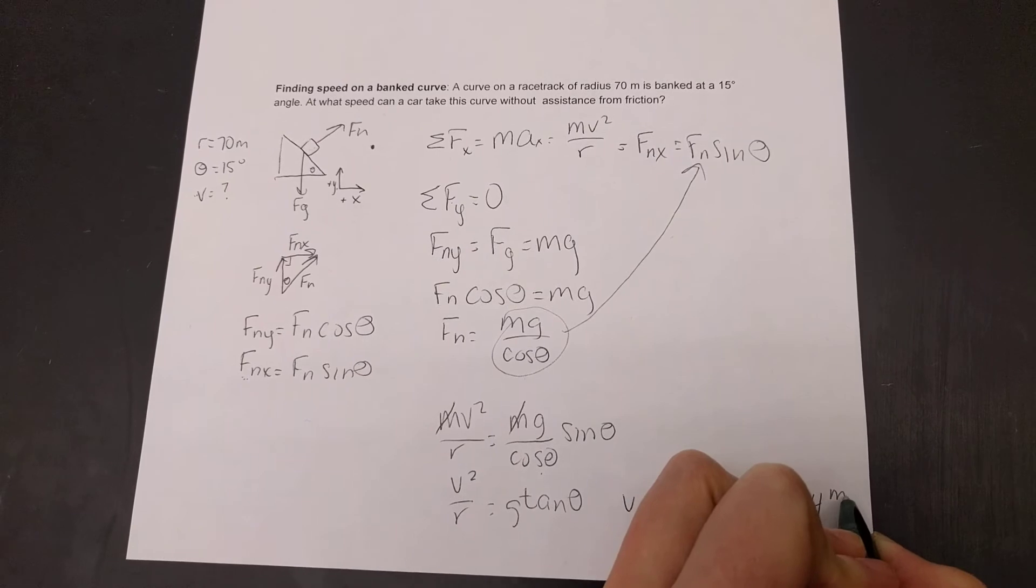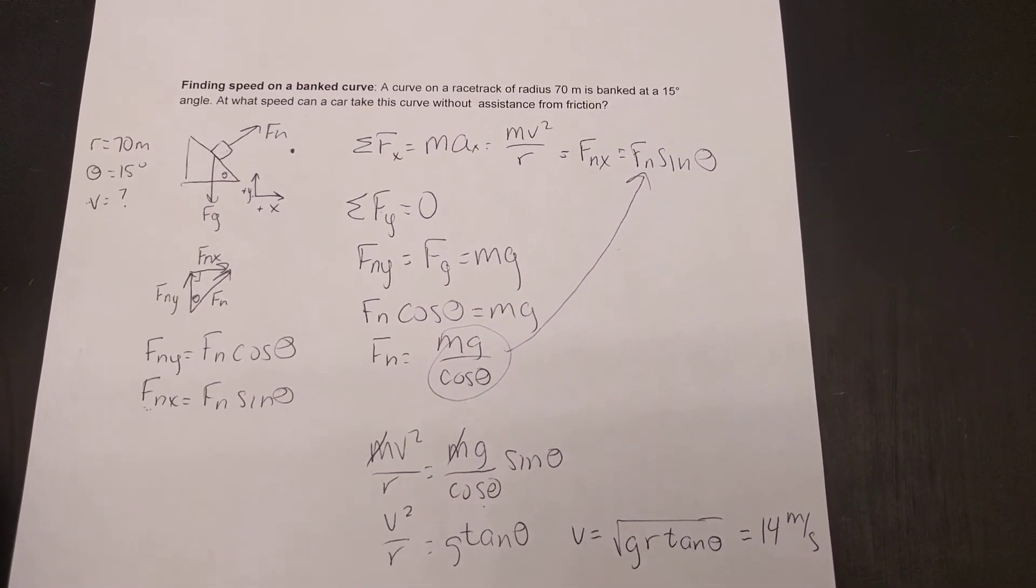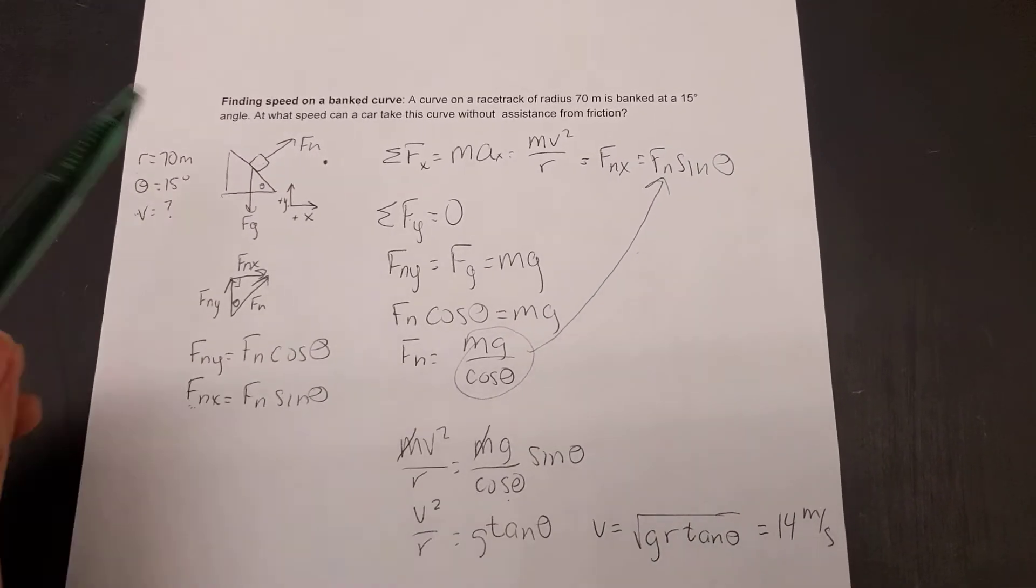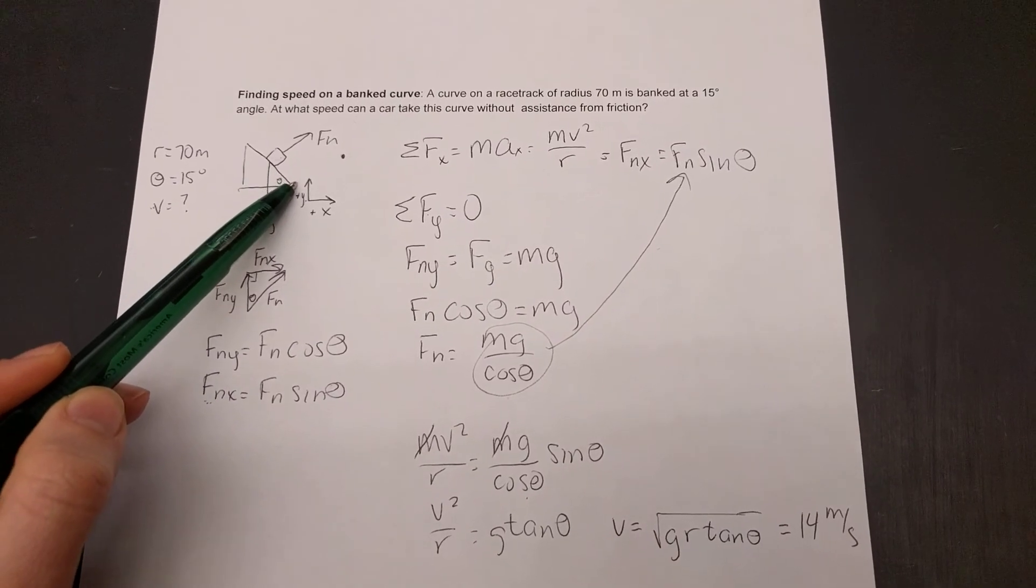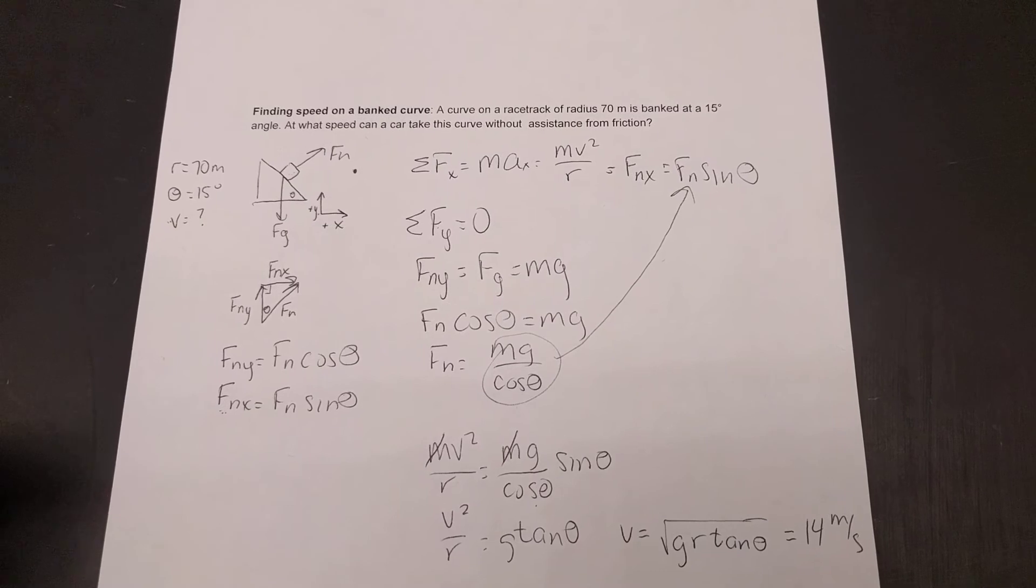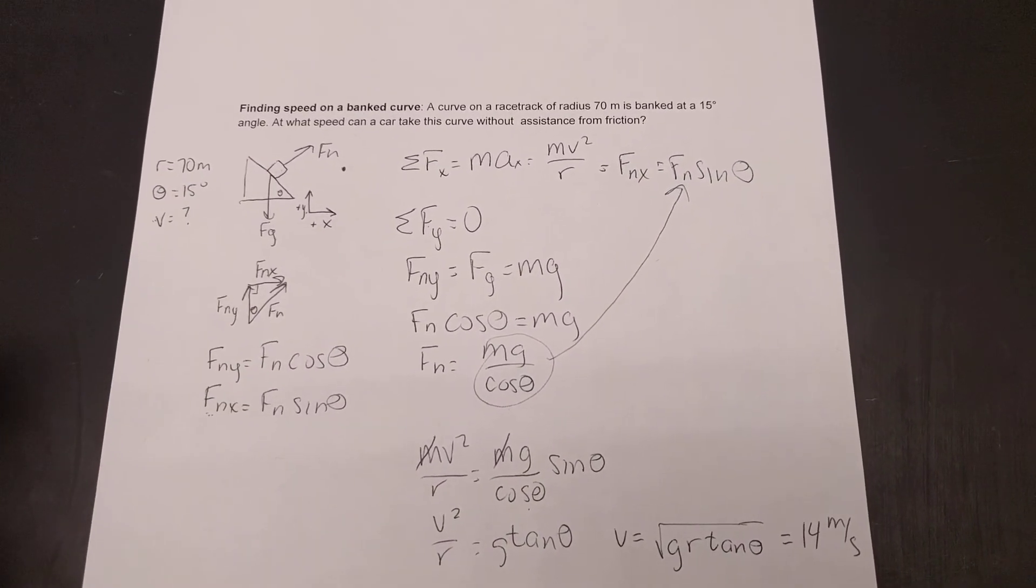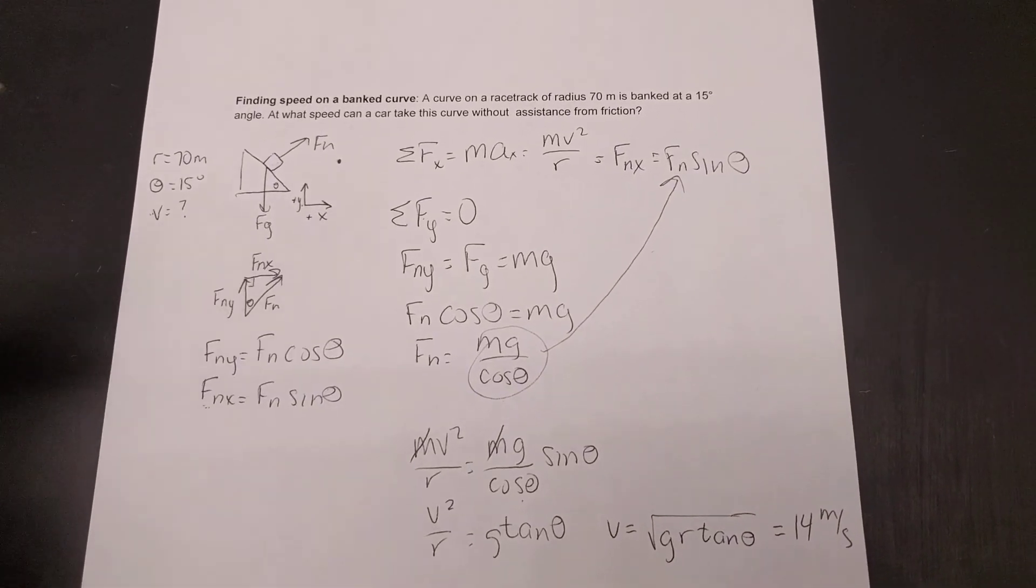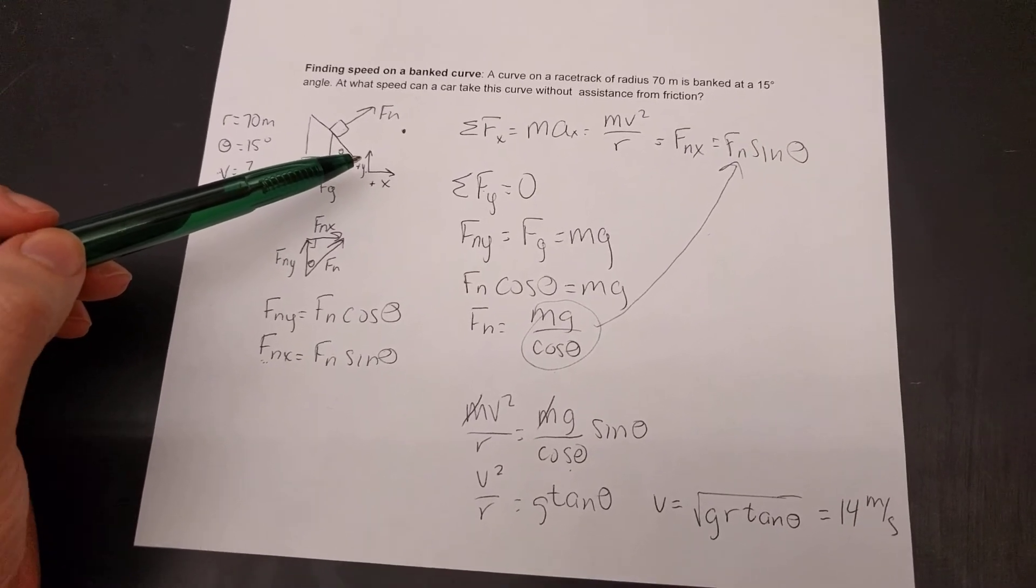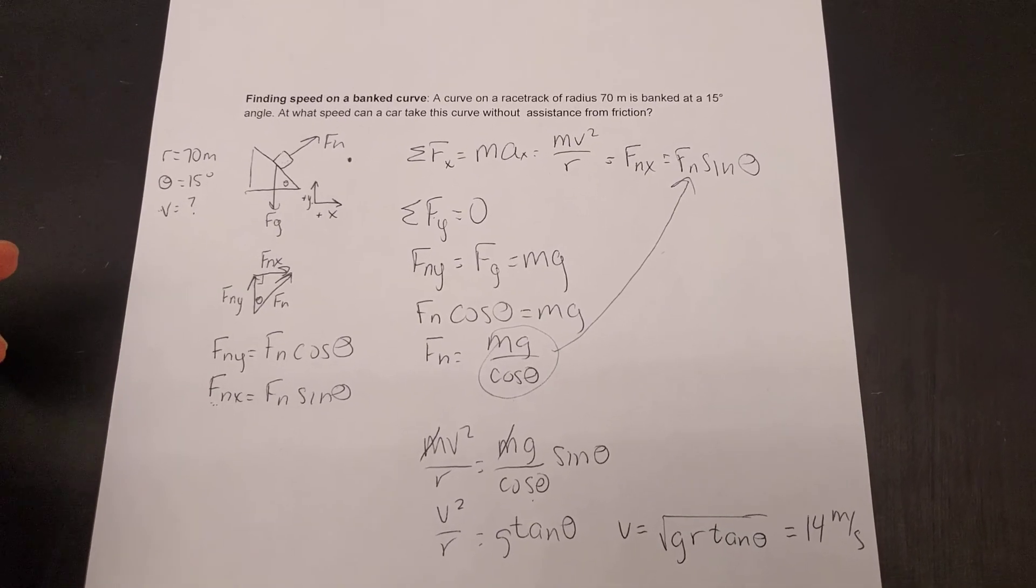Alright, so this bank surface allows us to move at a speed of 14 meters per second without slipping. So, even if this was super slick ice, no friction at all, we are still able to make this turn because we are at an angled surface. So, this is the reason why, if you're watching some sort of race car race, maybe NASCAR or something, they are able to move faster along the curves because the curves are very banked.